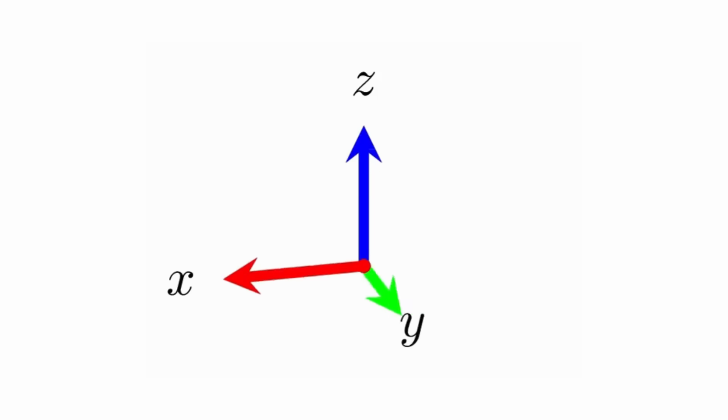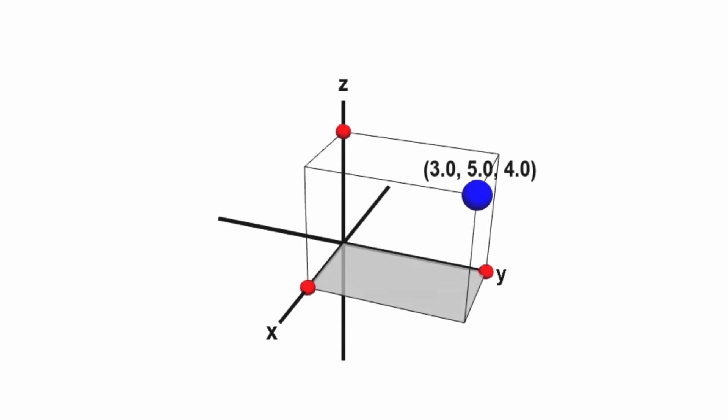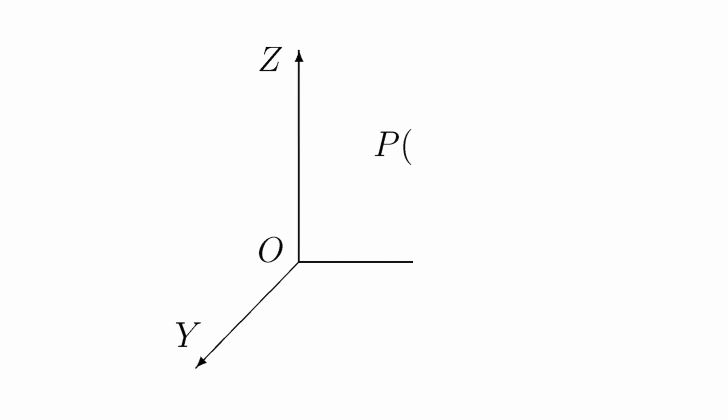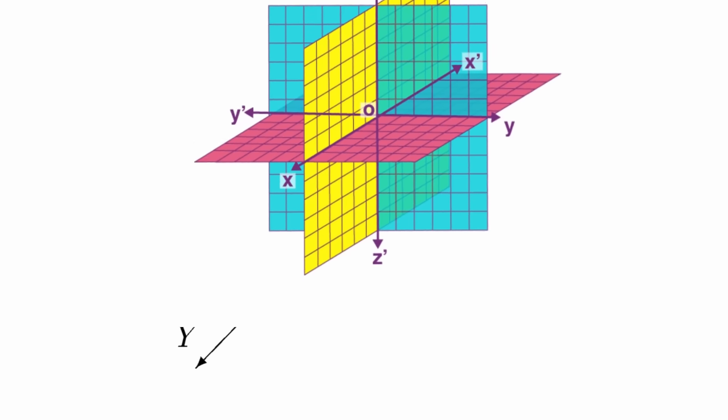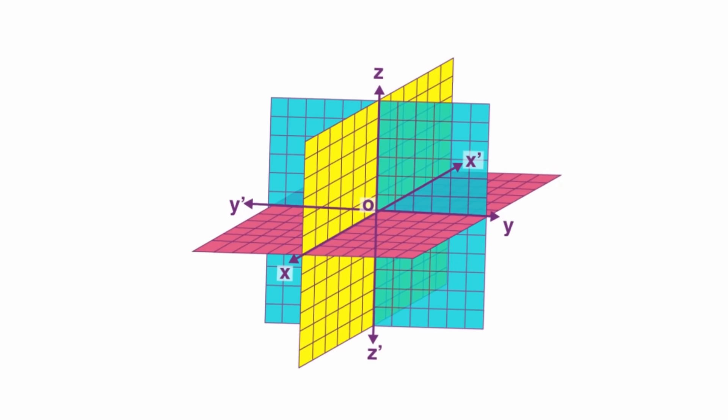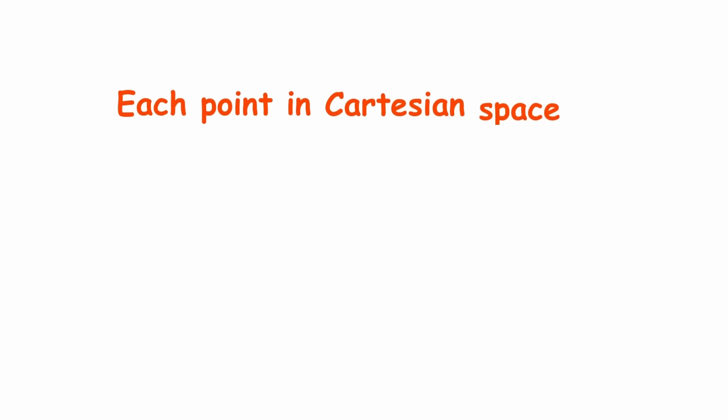The three-dimensional Cartesian plane is a reference system formed by three perpendicular axes X, Y, Z, which define three-dimensional space. Each point is represented by coordinates X, Y, Z, allowing to locate positions and describe geometric relationships.